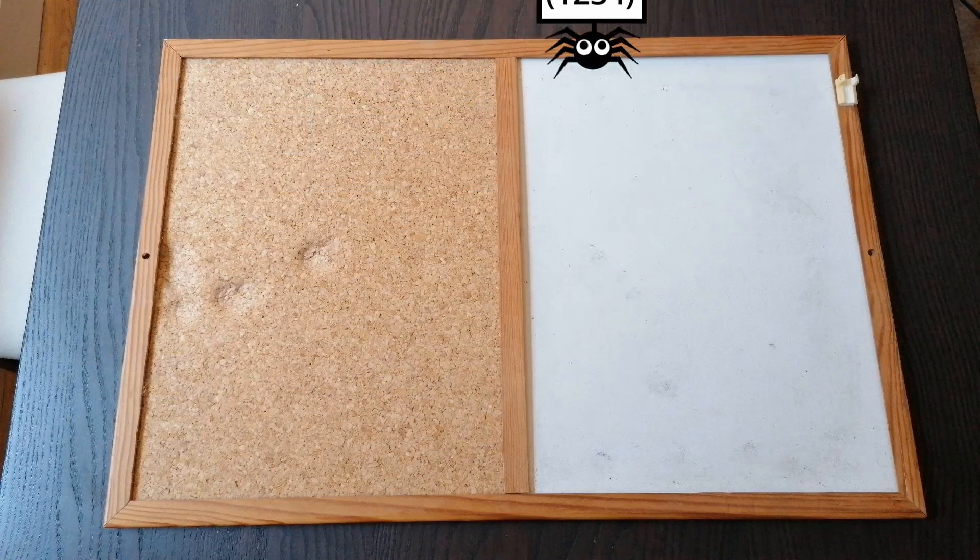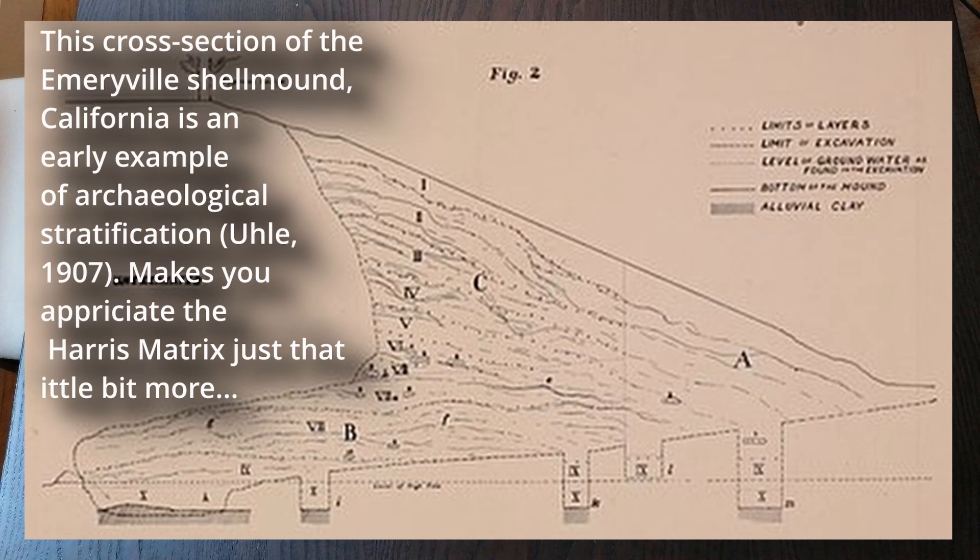So, let's start at the beginning. Created in 1973, the Harris matrix absolutely revolutionised archaeological practices in that it provided a simple diagrammatic way of depicting the relationship between different contexts.